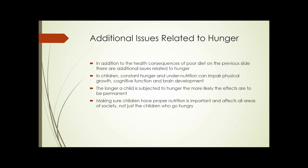In addition to the main culprits that we think of — obesity, heart disease, and diabetes — there are additional issues related to hunger in children. Constant hunger and undernutrition can impair physical growth, cognitive function, and brain development. The longer a child is subjected to hunger, the more likely the effects are to be permanent.